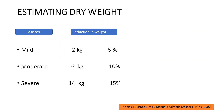For mild ascites, we subtract either 2 kg or 5% of body weight. For moderate ascites, we subtract 6 kg or 10% of total body weight. For gross or severe ascites, we subtract 14 kg or 15% of total body weight. This corrected body weight is then used to calculate the BMI in such patients.